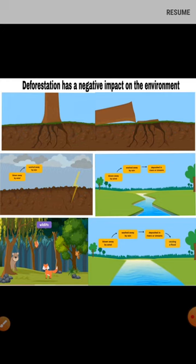Another negative impact of deforestation is that it affects wildlife. Wildlife depends on plants for shelter and food. If we keep cutting down trees, wildlife will have no place to live and no food to eat, and these animals will also face the point of extinction.